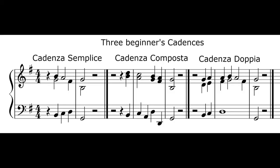The difference between them lies in the length of the dominant note in the bass. In the simple cadence, the dominant D lasts for one beat — a crotchet, or quarter note. In the compound cadence, the dominant D lasts for two beats — a minim, or half note. In the double cadence, the dominant D lasts for four beats — a whole bar, or full note.